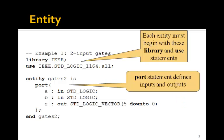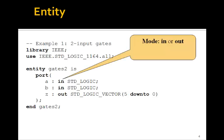The entity has the entity name gates2, and then it uses this port statement, and the port statement defines the inputs and outputs. In this case, we have the two inputs, A and B, and the output Z. We use the statements in or out, the so-called mode, to say that A and B are inputs, and we use out to define Z as an output.